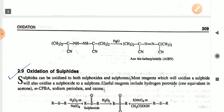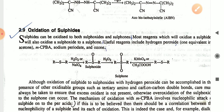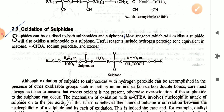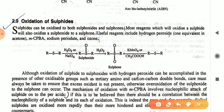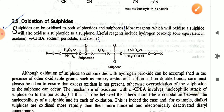The next topic is oxidation of sulfides. Sulfides can be oxidized to both sulfoxides and sulfones. A useful reaction is the oxidation of a sulfide in the presence of a peracid, H₂O₂, or NaIO₄ to give the sulfoxide. Further oxidation with H₂O₂ gives the sulfone as the final product.